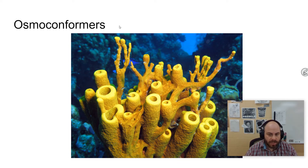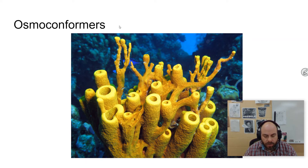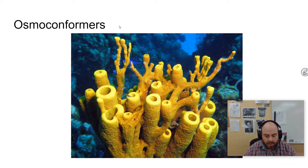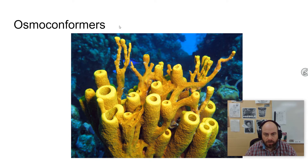Osmoconformers are mostly ocean invertebrates like sponges and other simpler life forms. There are two categories here. Stenohaline organisms have a very narrow range of salinity change — some saltwater fish can't have any freshwater at all. Then there's euryhaline, which means able to have a broad range of salinity, so they could survive in the ocean, in freshwater, or an estuary. Salmon would be a great example of a euryhaline organism.